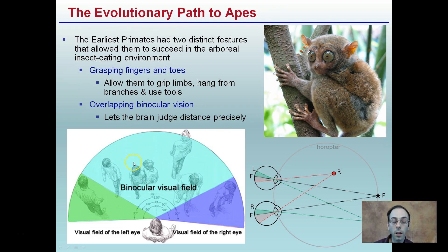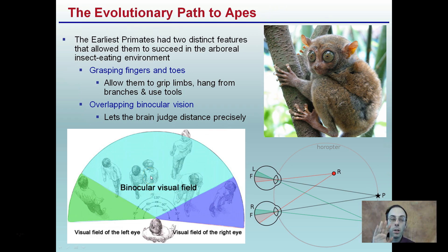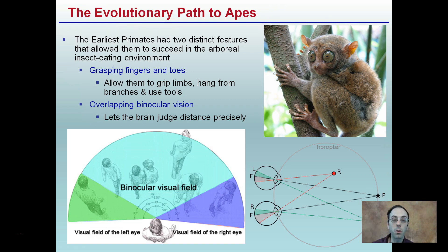Our binocular vision, when our eyes overlap, allows us to determine how far an object is from us. If you know anyone who has damage to one of their eyes, they may be restricted from playing certain sports because of their lack of depth perception.